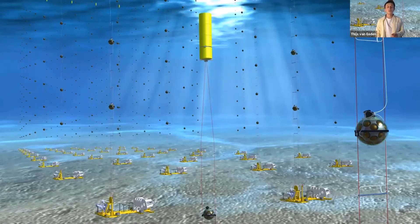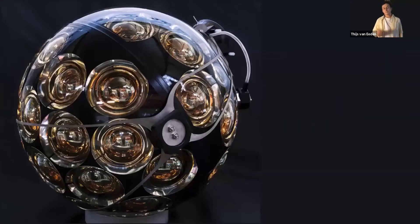If we take a look at one of these glass spheres, you see 31 eyes and these eyes are the sensitive light sensors that can detect single photons. We place these glass spheres in a three dimensional grid at the bottom of the sea.